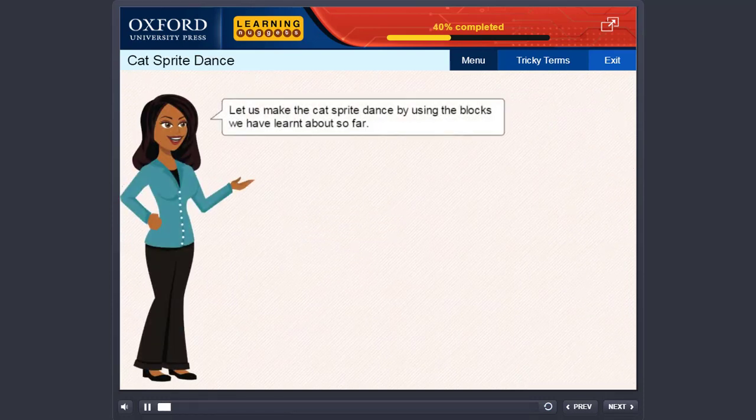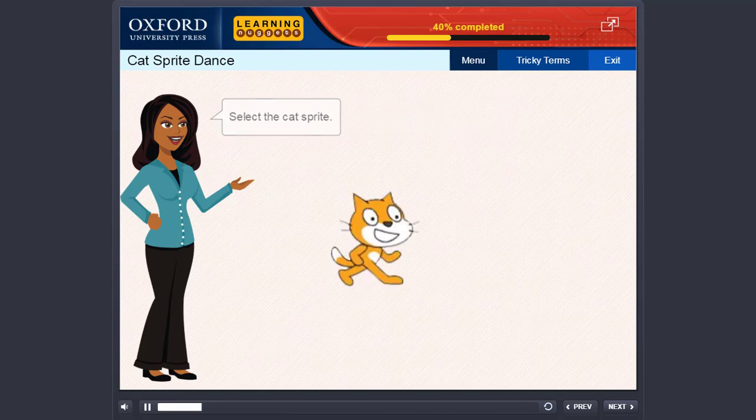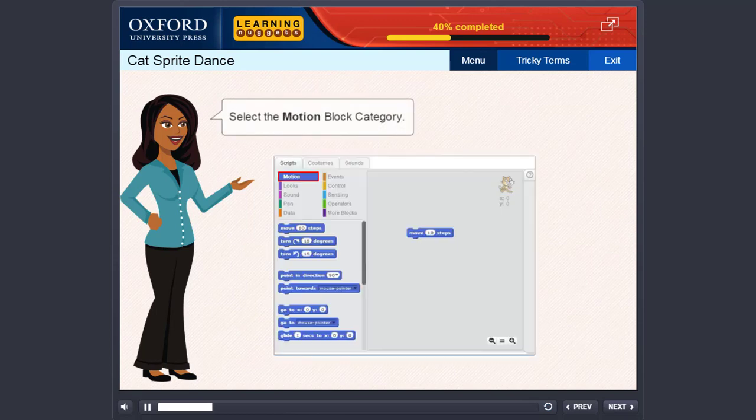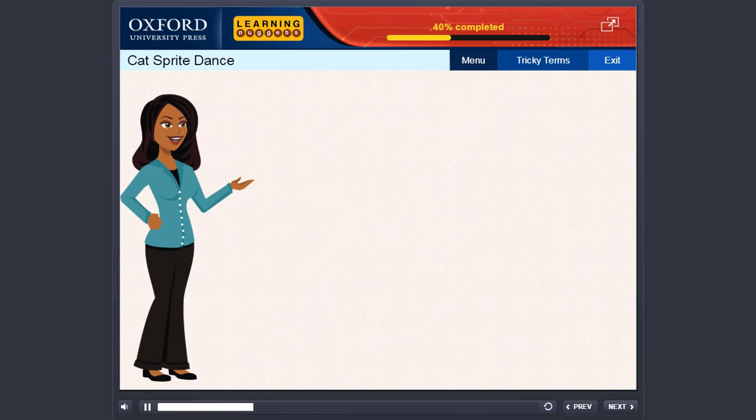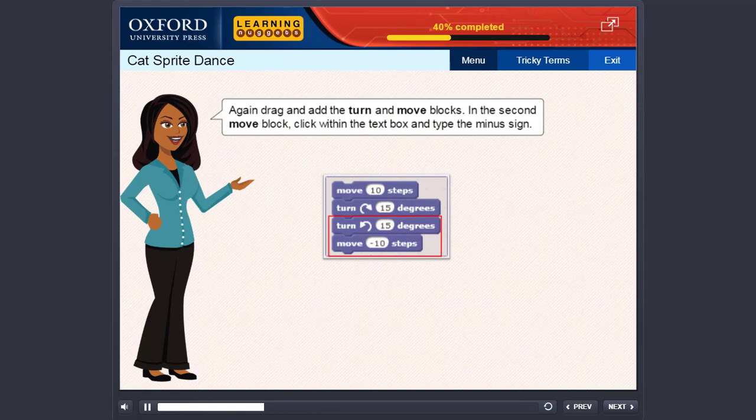Let us make the cat sprite dance by using the blocks we have learnt about so far. Select the cat sprite. Select the Motion block category. Drag the Move and Turn blocks from the block palette to the Scripts area. Again, drag and add the Turn and Move blocks.